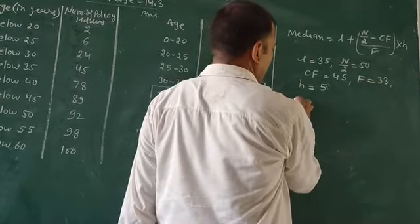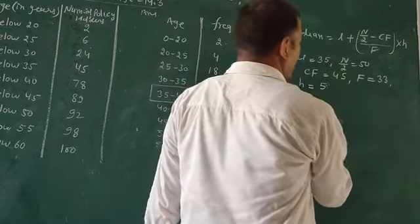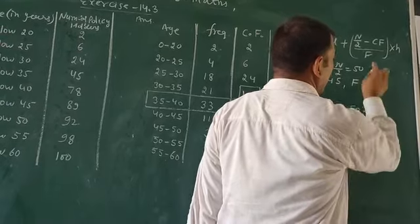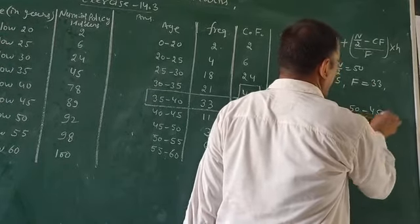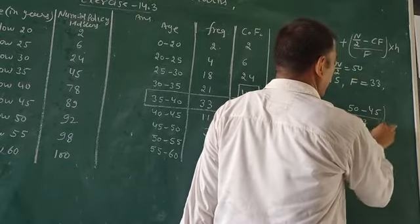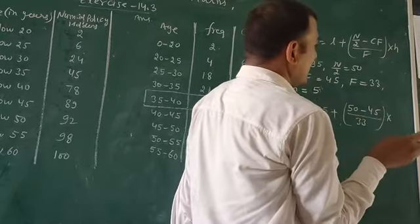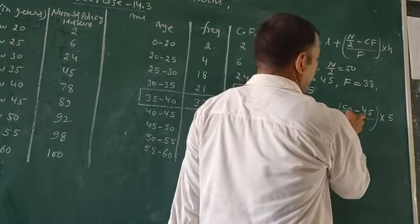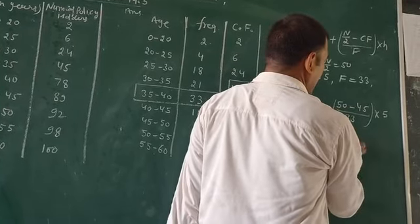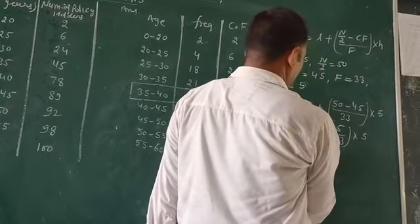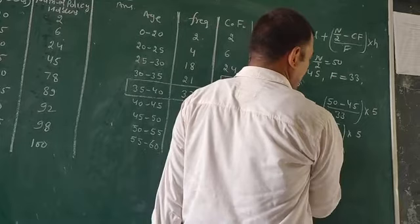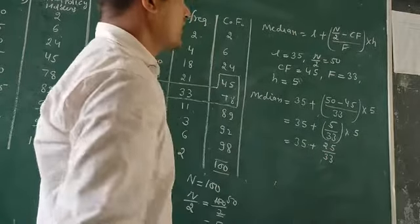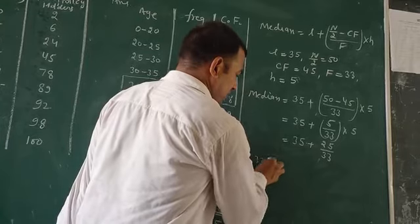CF, the cumulative frequency just less than 78 is 45. F upon, F is 33. H means interval, the class interval difference. Median equals L is 35 plus N by 2 is 50 minus CF is 45 upon F is 33 into H is 5. 35 plus 5 by 33.